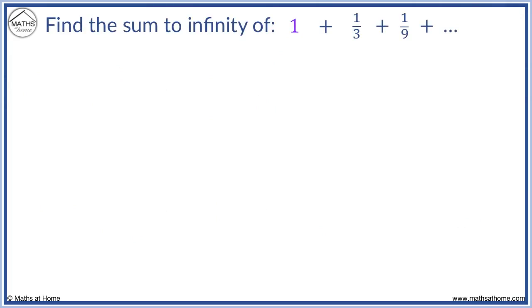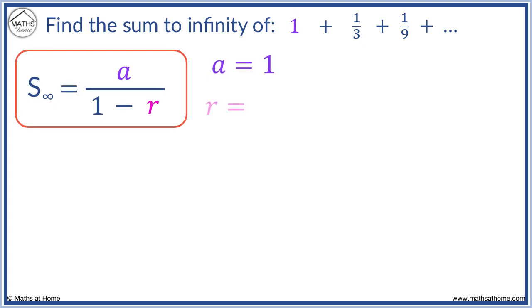Find the sum to infinity of 1 plus a third plus a ninth and so on. a equals 1. To find r, we divide 1 third by 1 to get 1 third.